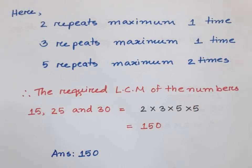2 repeats maximum one time, 3 repeats maximum one time, and 5 repeats maximum two times. Therefore, the required LCM of 15, 25, and 30 is equal to 2 × 3 × 5 × 5 = 150. So the answer: LCM is 150.